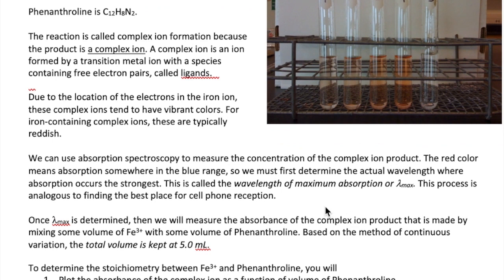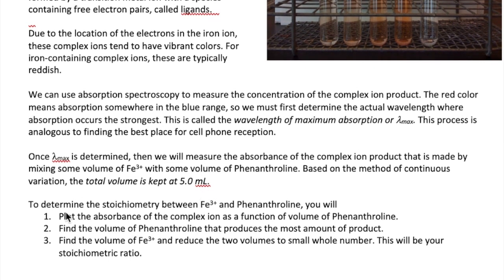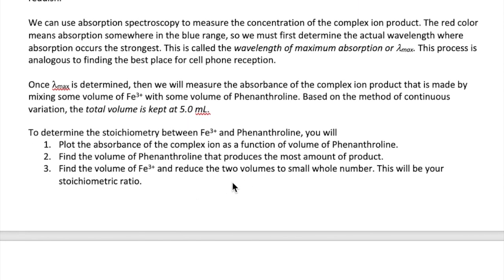we'll then use that wavelength to perform a continuous variation experiment. So we'll mix various ratios of iron to phenanthroline, keeping the total volume fixed at 5 milliliters. Just like in the example I did earlier, once the data is obtained, you'll plot the data,